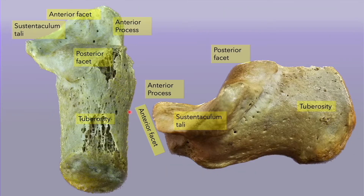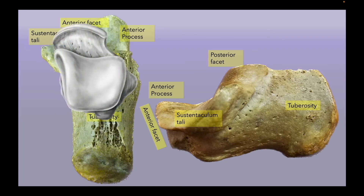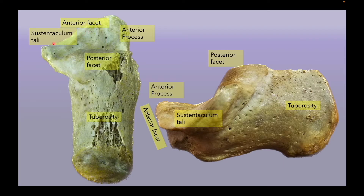When we see the calcaneum from above, this is the lateral part and this is the medial part. The posterior facet we have already seen — this is kind of an end-on view where our viewing angle is directly parallel to the posterior facet. Now the anterior facet is becoming more clear. The undersurface of the talar head rests on this part, and this is the sustentaculum tali. The anteromedial part of the talar head articulates with the sustentaculum tali. The anterior facet is just anterior to the angulation — the junction of the posterior facet with the anterior part of the calcaneum.